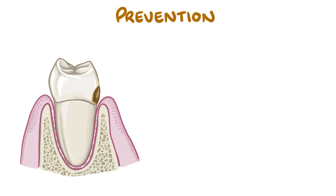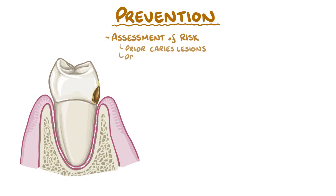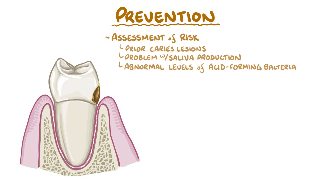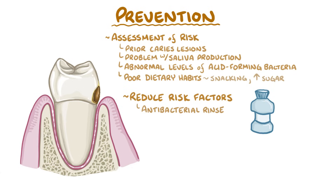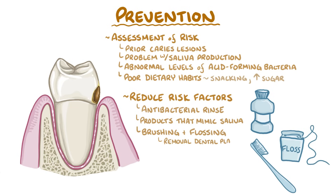It's always ideal to prevent a caries lesion from forming in the first place, and it starts with a risk assessment for identifying individuals at high risk of caries. That includes individuals that have had a prior or current caries lesion, have problems with saliva production, have specific abnormal levels of acid-forming bacteria like mutans streptococci and lactobacillus in their mouths, and those with poor dietary habits like frequent snacking and a high sugar diet. Treatment of dental caries disease depends on the level of risk — specifically reducing pathogenic risk factors like antibacterial rinses to get rid of bacteria, and increasing protective factors like products that mimic saliva. Brushing and flossing are useful because they physically remove dental plaque, as well as deliver fluoride to the teeth to help with remineralization. Products that have fluoride can help remineralize spots where enamel has lost its hard minerals.